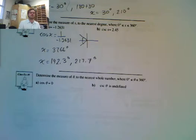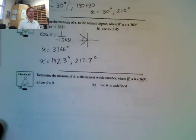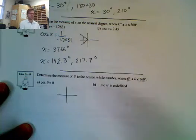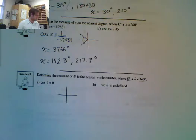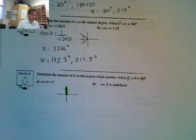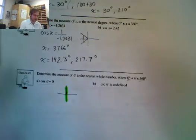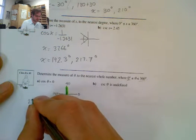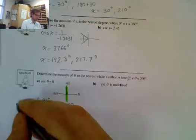Let's look at class example number 5: determine the measure of theta between 0 and 360 degrees when cosine of theta equals 0. When cosine is 0, there's no x-component — it must be on the y-axis. So we're either at 90 degrees or 270 degrees. We don't need to calculate a reference angle since it's exactly 0. My answers are theta equals 90 degrees and 270 degrees.